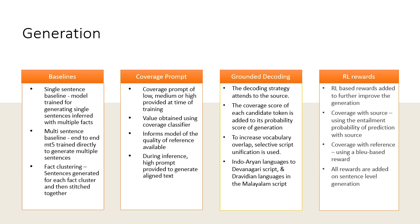A reward based on coverage with source was defined using the entailment probability of prediction with source, which measures how probable a token is based on the source if it isn't available in the reference. This handles divergent references. Next, a reward based on coverage with reference was used, which is defined using a BLEU-based reward. All these rewards are applied for sentence-level generation.